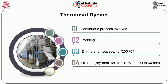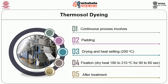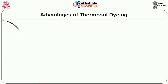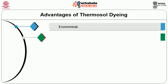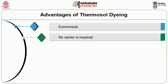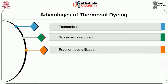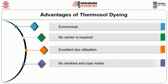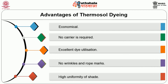The temperature range may vary from 180 to 210°C — 90 seconds at 180°C and 60 seconds at 210°C. Advantages of thermosol dyeing: being a continuous process, large yardages can be economically dyed; no carrier is required so there is no environmental pollution. Excellent dye utilization of 75 to 90% is achieved. Treatment is in open width so there are no wrinkles or rope marks. Simultaneous heat setting and dyeing can be carried out. The dyeing is unaffected by pre-heat setting, and high uniformity of shade can be obtained throughout the fabric.